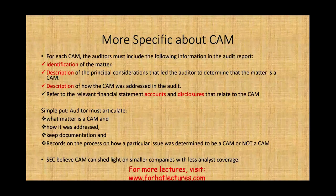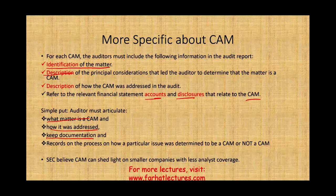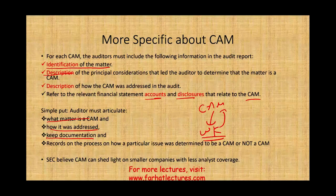For each CAM, the auditor must include the following: identification of the matter; description of the principal considerations that led the auditor to determine the matter is a CAM; description of how the CAM was addressed in the audit; and reference to the relevant financial statement accounts and disclosures that relate to the CAM. Simply put, the auditor must articulate what the CAM is, how it was addressed, and what documentation they have. Make sure the work papers support your CAM — if you claim a critical audit matter, show it in the work papers. The auditor can be reviewed by the PCAOB or face litigation.